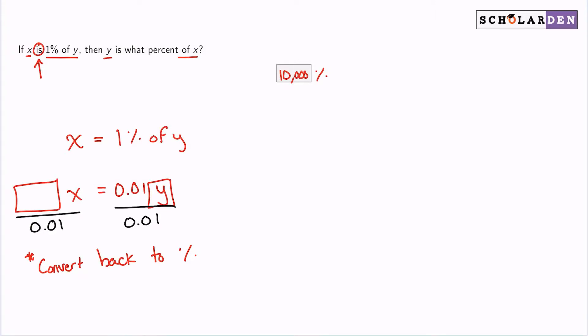So what is 1 divided by 0.01? Because there's a 1 there multiplied by x. So what's 1 divided by 0.01? Well, you can grab your calculator. 1 divided by 0.01 gives you 100. So this goes to 100x equals y.